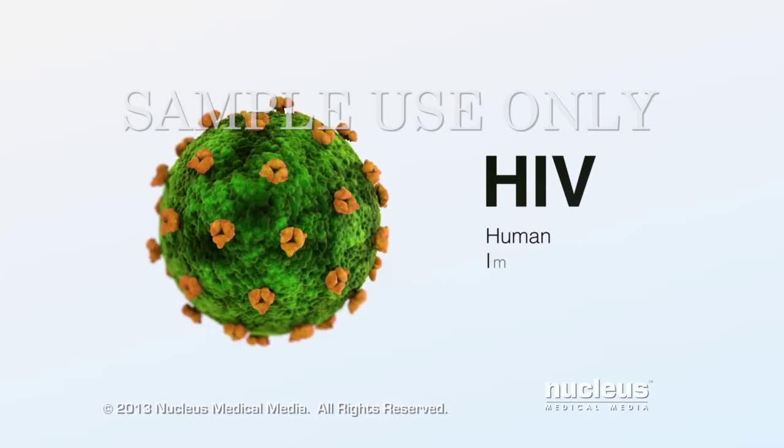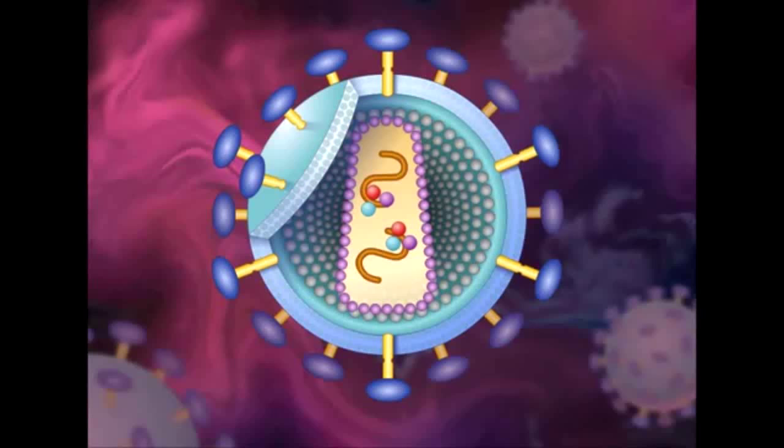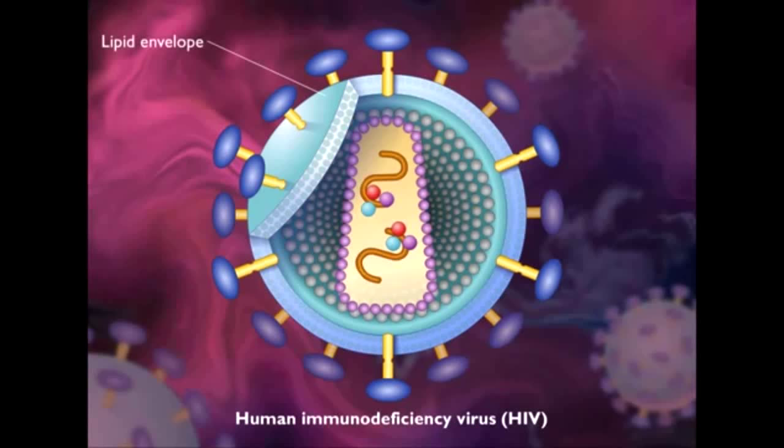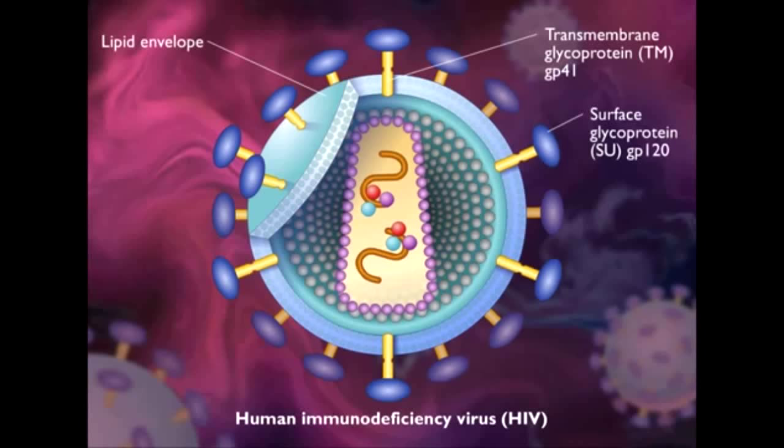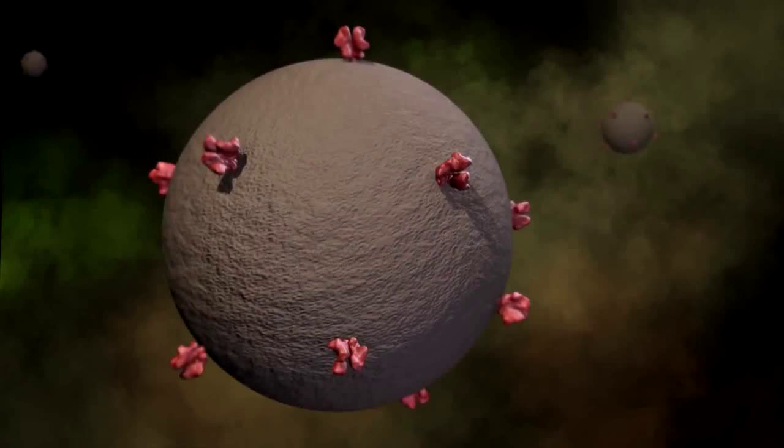HIV is the Human Immunodeficiency Virus. This is an enveloped virus. The envelope is derived from the host cell membrane with viral glycoproteins such as GP120 and GP41 inserted into the membrane as the virus leaves the cell.